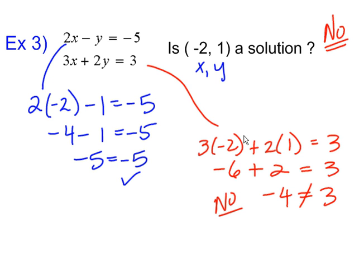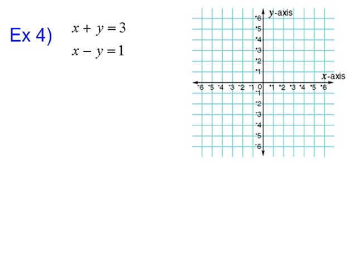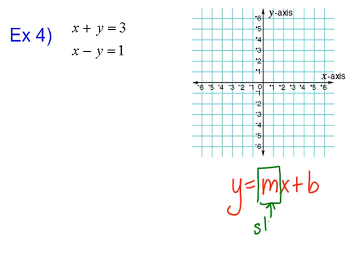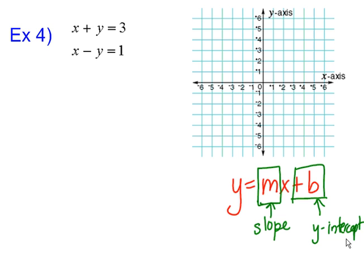Now let's practice a little bit of graphing. Here we have two equations: x plus y equals three, and x minus y equals one. Remember the slope-intercept format — if we can get the equation into this format where the y is by itself on one side and the other numbers are all on the other side, we're able to find two things. We'll be able to look at the value next to the x and know that's the slope — the rise over the run, the angle of the line — and slope is a fraction.